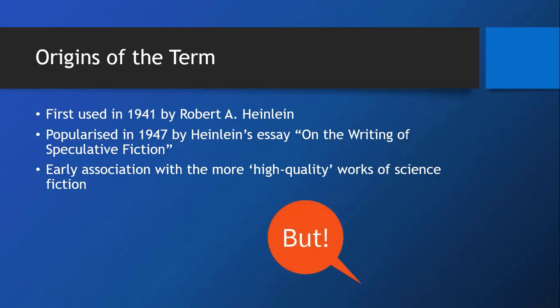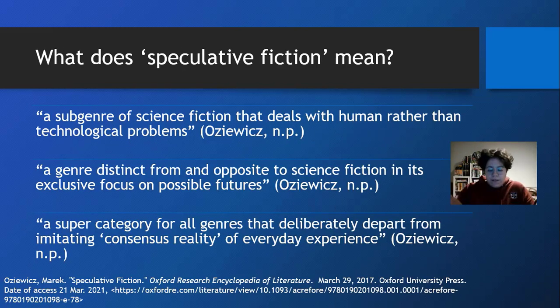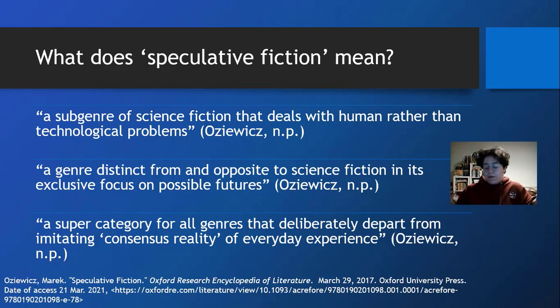But the existence of so many different meanings of the term makes it necessary for us to talk about what speculative fiction can mean and what it will mean for us over the course of the lecture series and this research project. When we talk about speculative fiction, there's not an easy way to tell immediately what we are talking about, because there are at least three things we could mean — and that's even in addition to the speculative fiction as literary disguise meaning that we talked about before.